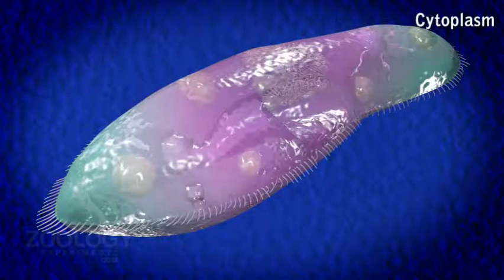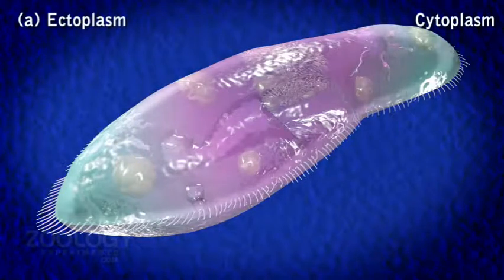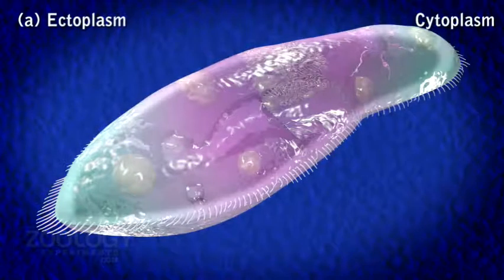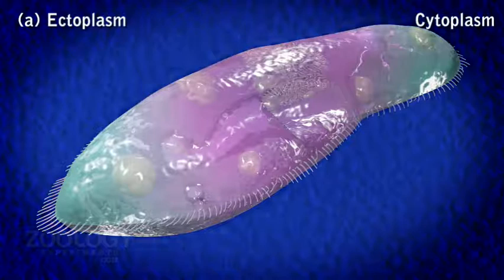1. Ectoplasm: The narrow peripheral clear and dense zone is called the ectoplasm. It comprises the structure of the infraciliary system and the trichocysts.